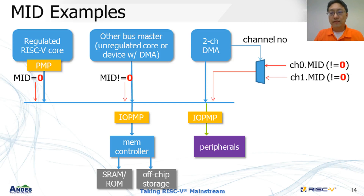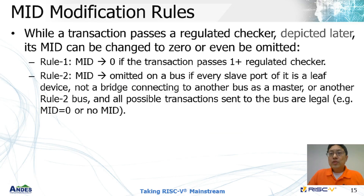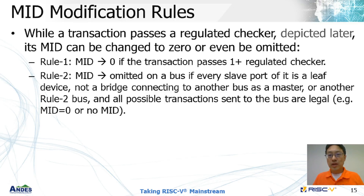In the bottom half, there are two types of slave devices: memory-like devices and MMIO peripherals. We put an IOPMP for each. We have two rules related to MID modification. When a transaction has been checked by a regulated checker, its MID can be changed to zero — that is rule one. Furthermore, if all possible transactions on the bus are checked, there is no need for an MID on this bus. This describes a recursive rule as rule two.